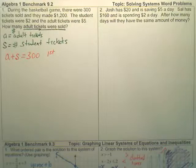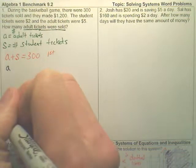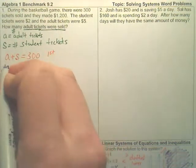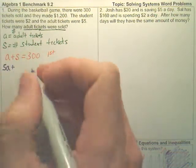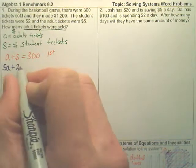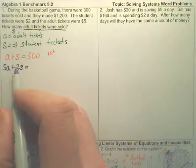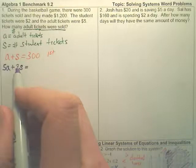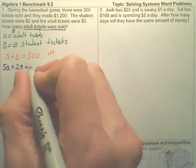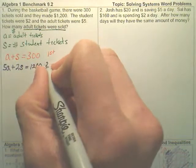We can make a second equation. Well, how much is it per adult ticket? Isn't it $5 per adult ticket plus how much per child or student? $2 per student ticket. If it's $5 per adult ticket plus $2 per student ticket, what should this add up to? How much money altogether? $1,200. Want to add up to $1,200? This is your second equation.